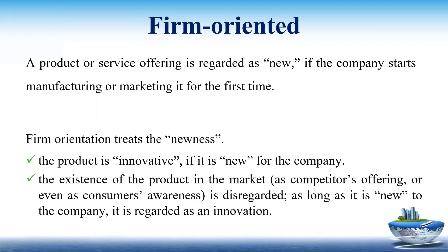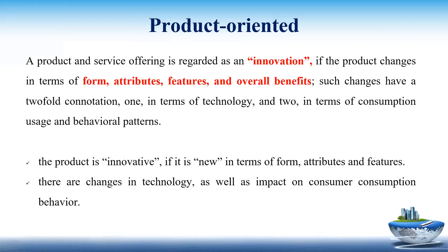So firm orientation deals with the term newness in terms of manufacturing or marketing of a product — that is called innovation. The second orientation is product orientation. The product or service is regarded as an innovation if the product changes in terms of form, attribute, features, or overall benefits.